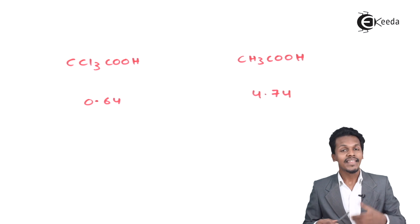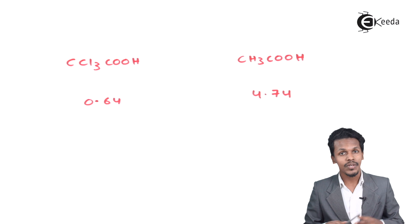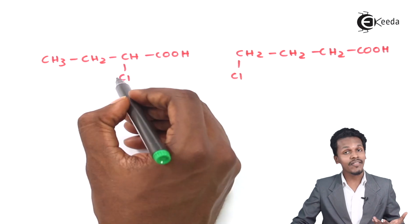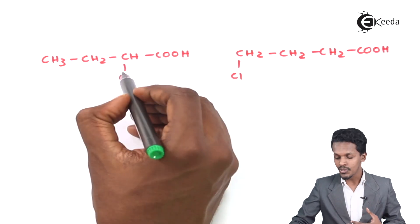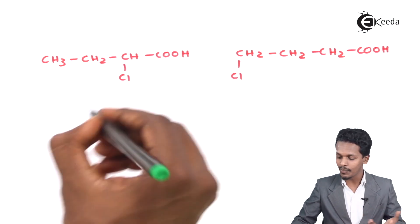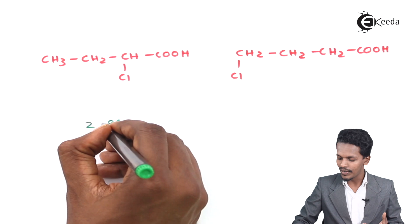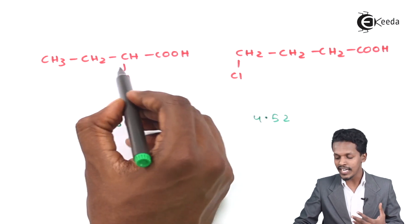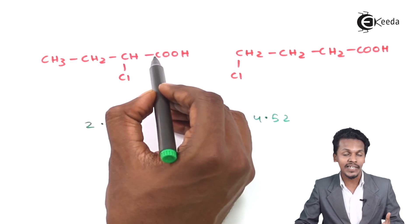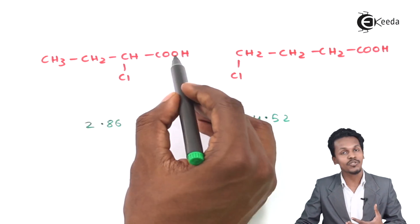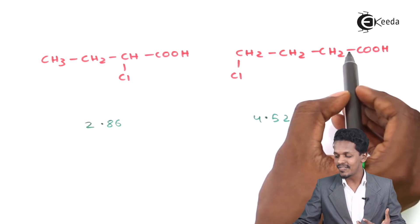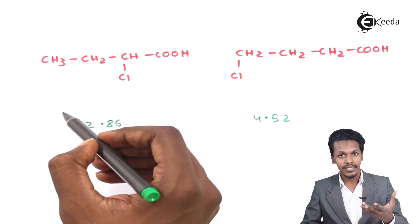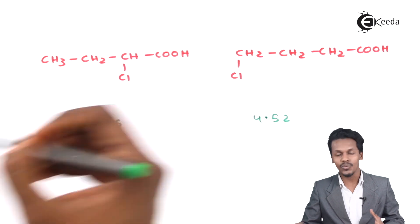The acidic strength depends on where the substituent is attached. For example, chlorine is an electron withdrawing group. If this electron withdrawing group is very close to the carboxyl group, the pKa value is 2.86, whereas if it is farther away, the pKa value is 4.52. The closer the electron withdrawing group is to the carboxyl group, the more easily the H⁺ ion is removed. The chlorine atom farther away from the carboxyl group still has an effect, but a smaller one, making that compound a weaker acid.